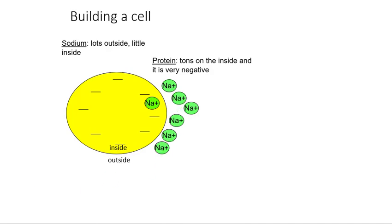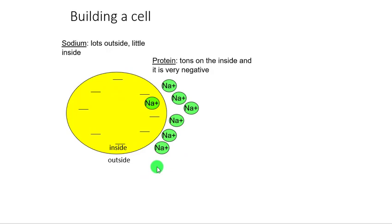That is a fact you're going to have to remember forever — for the rest of this course as well as all of Bio 142. You're going to see this when you study the heart, the kidneys, the GI system, and the nervous system. Sodium is primarily located in your body in extracellular environments. Extracellular means outside the cell.